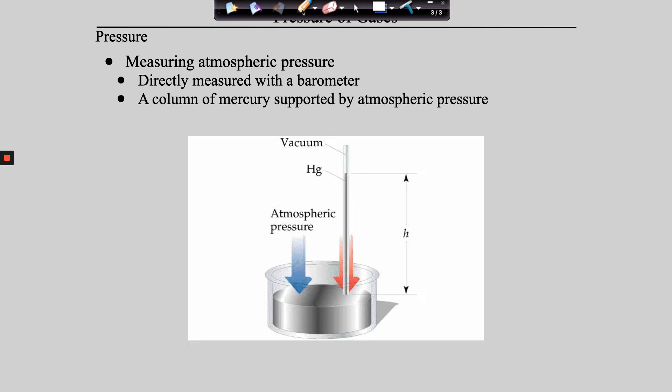Inside the International Space Station, the cabin is pressurized, so straws work there. But outside the station there is no atmospheric pressure, so straws don't work. Gravity is a separate issue that also plays a part.